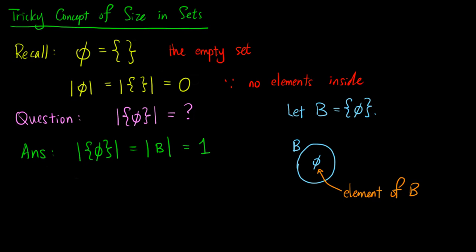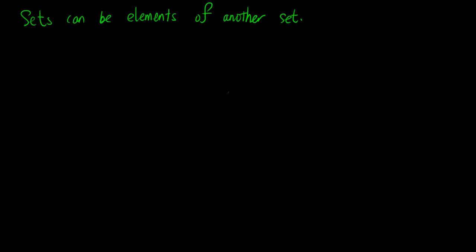This may seem confusing at first. It is beneficial to know that it does not matter what kind of elements are inside set B — it does not matter whether the element is the empty set or not. It is the same logic as asking what is the size of the set containing an arbitrary element X. It is just that, in this case, X is the empty set. The core of this concept lies in the fact that sets can legitimately be elements of another set.